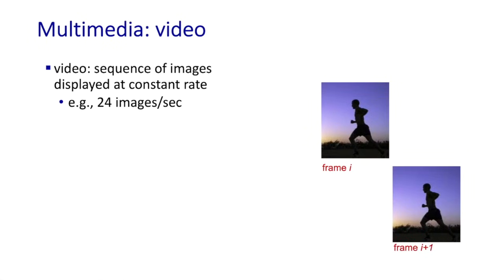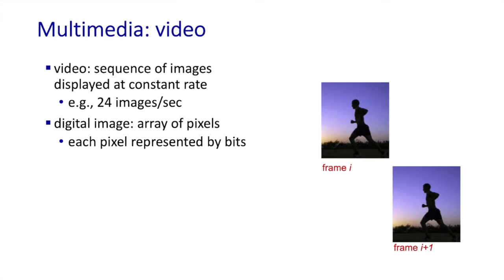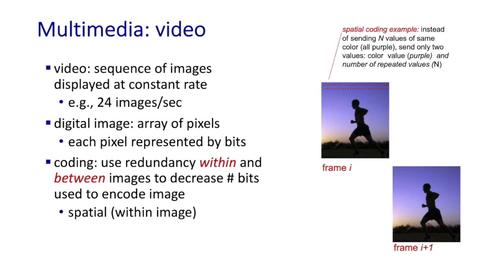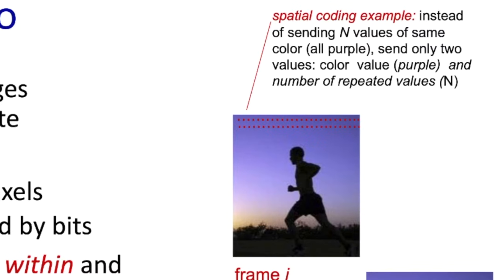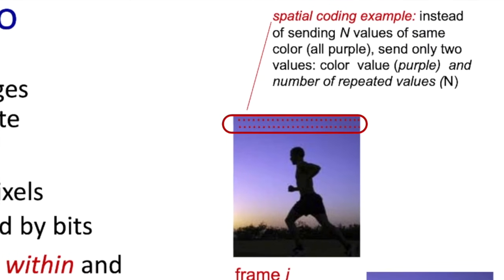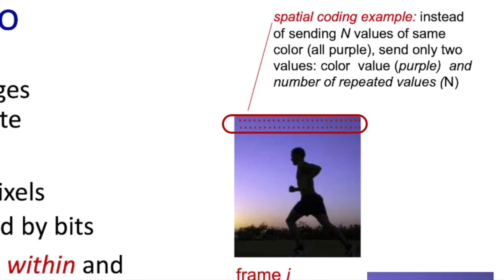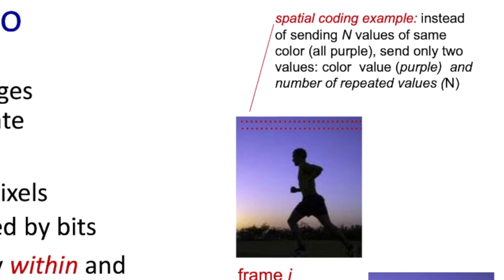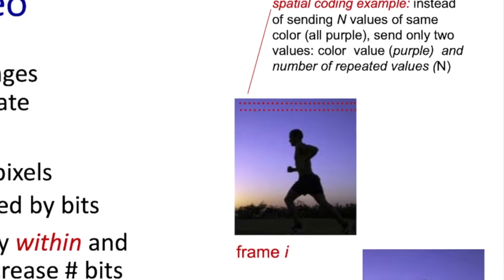A video is just a sequence of encoded images, sometimes called frames, taken at say 24 or 30 frames per second. Each image is a matrix of pixels. Those pixels are usually encoded to reduce the size of the images by exploiting image redundancy. There's spatial coding that exploits redundancy within an image. For example, rather than storing n repeated sky pixel values, we could store a single pixel value and the number of repeated instances — two values instead of n.